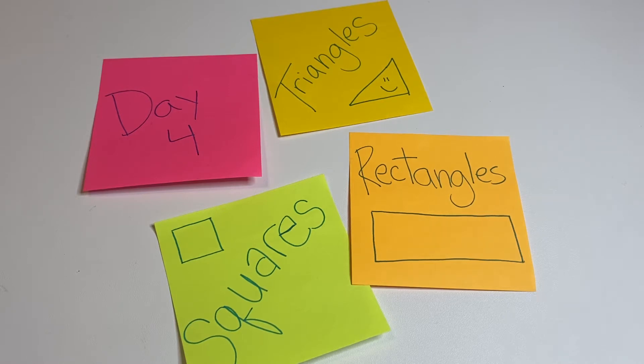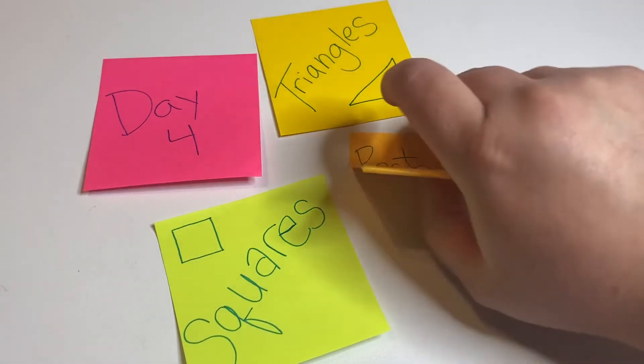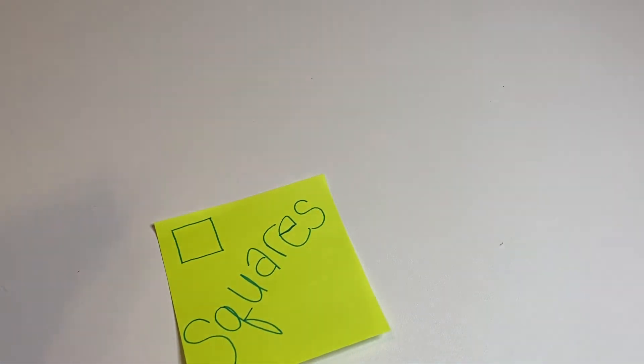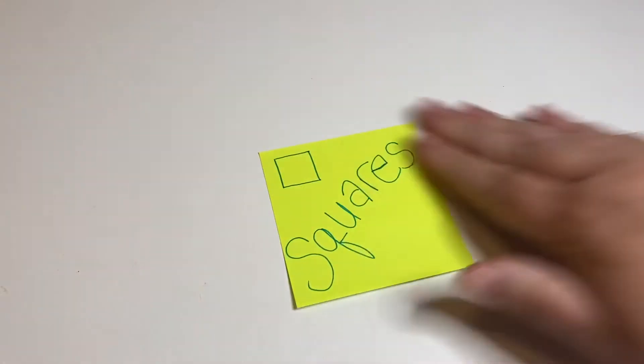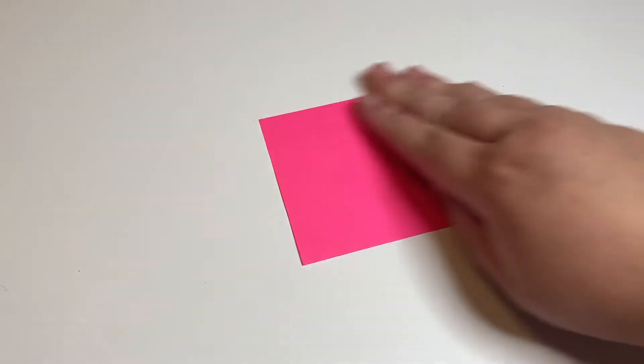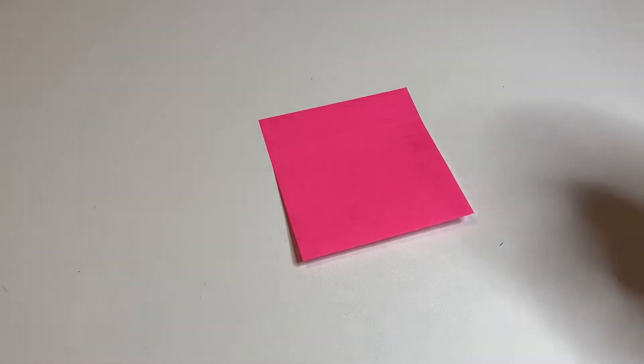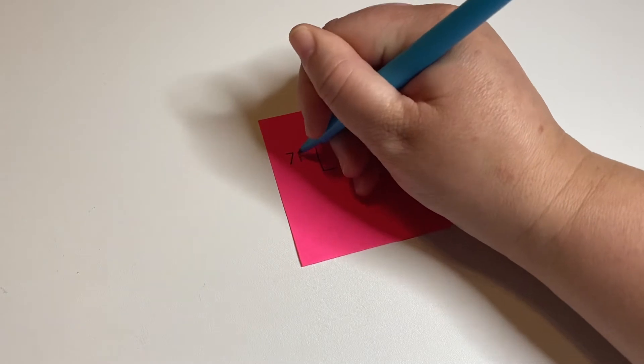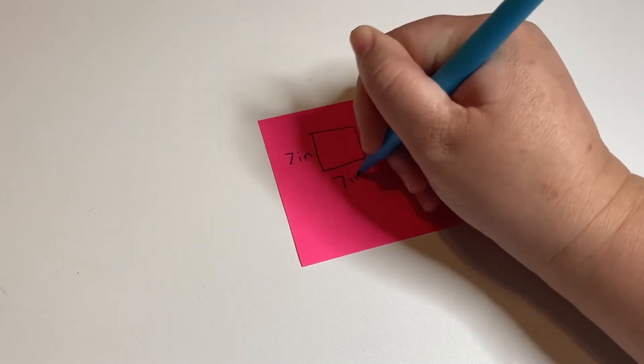I'm just going to do a review of all three of them. So let's start with squares. Okay, so let me get my handy dandy post-it note here. We're going to do a square that is seven by seven, so it's going to be seven inches by seven inches.